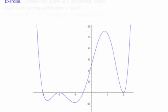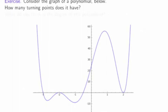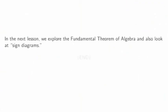Let's do this quick exercise. Consider the graph of this polynomial below. How many turning points does it have, and what do you think is the degree? The number of turning points seems to be five: it drops, rises, drops, rises, drops, and rises. So the degree of the polynomial should be six. In the next lesson, we explore the fundamental theorem of algebra and also look at sign diagrams.